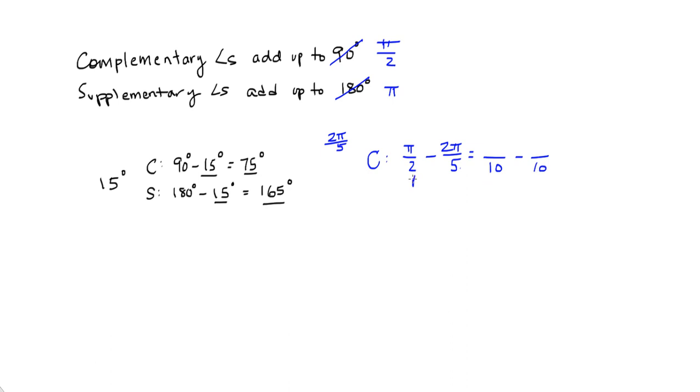And in this case, in this fraction, I have to multiply the bottom by 5, so I have to multiply the top by 5. In this fraction, I multiplied the bottom by 2, so I need to multiply the top by 2. What's 5 pi minus 4 pi? Pi over 10. So what are we saying? Pi over 10, and 2 pi over 5 are complementary angles.